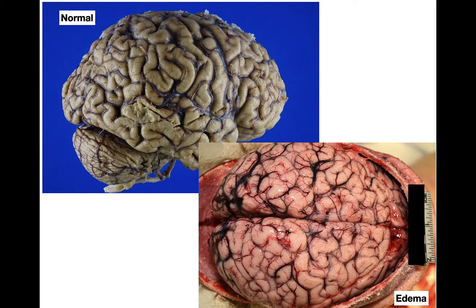For comparison, the top left shows a normal brain where the gyri are like little hills and the sulci are like little valleys — an undulating surface texture. At the bottom is a brain with cerebral edema, showing overall flattening of the surface giving it a smooth texture.